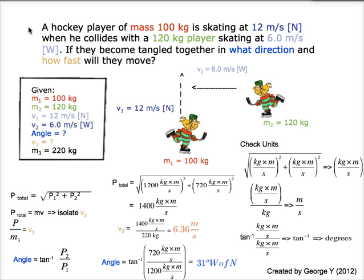The information given is highlighted with a color and labeled in a box as shown. The mass of the first player is 100 kilograms, and the mass of the second player is 120 kilograms. The velocity of the first player is 12 meters per second north, and the velocity of the second player is 6 meters per second west.